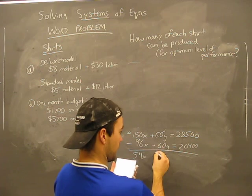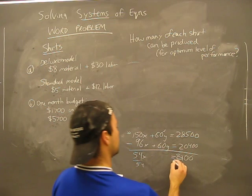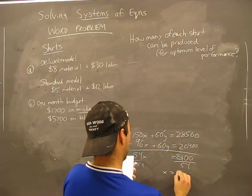Now when I subtract here, here's what I get. 54x, nothing there, equals 8100. I divide by 54, and my x equals 150.